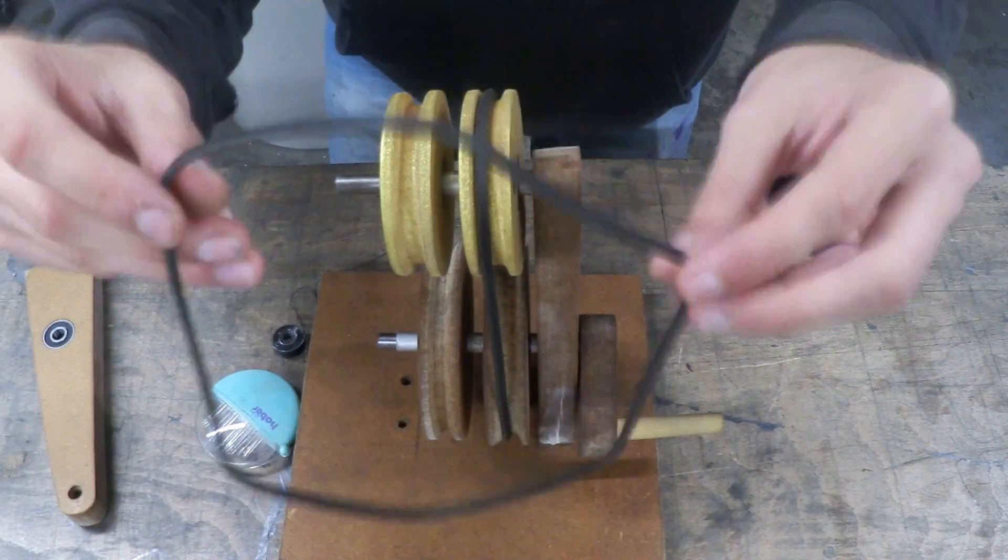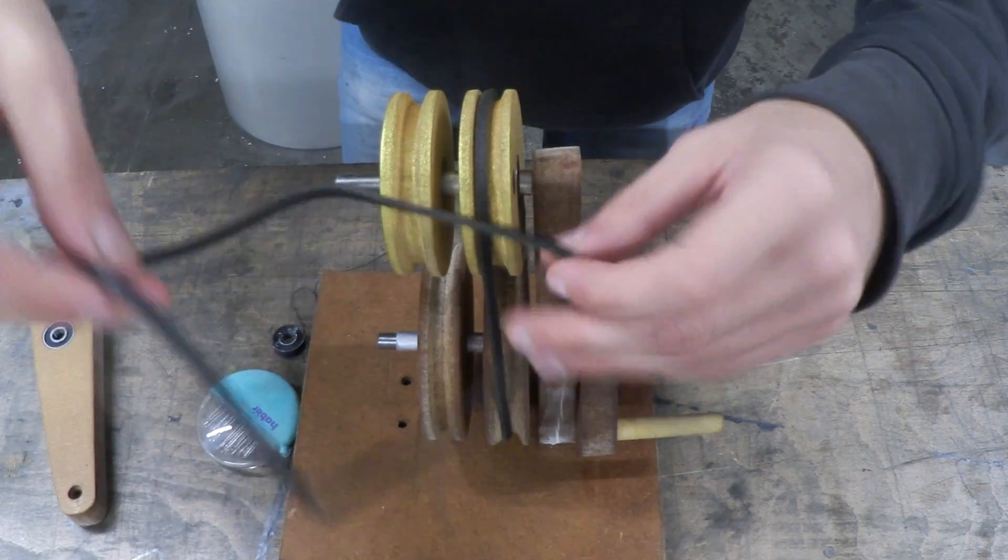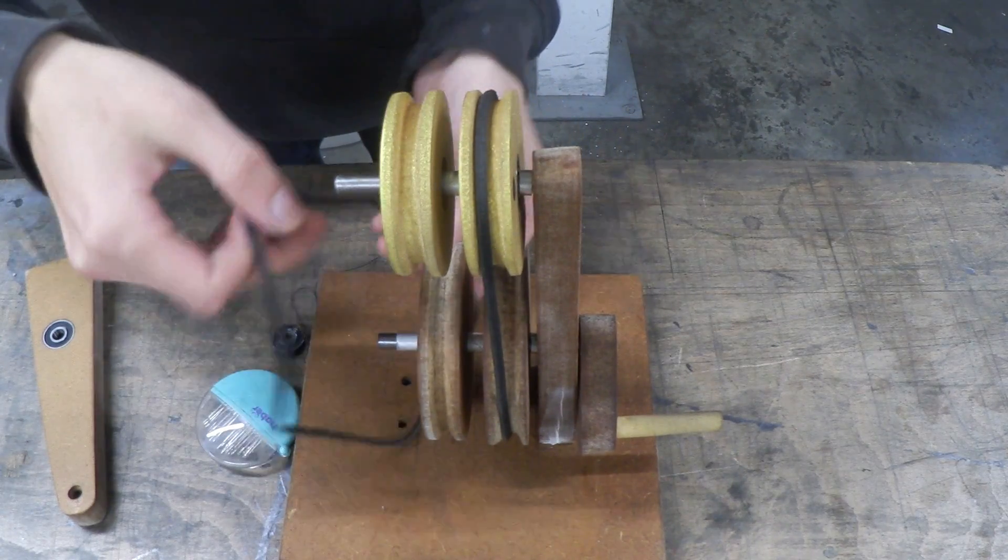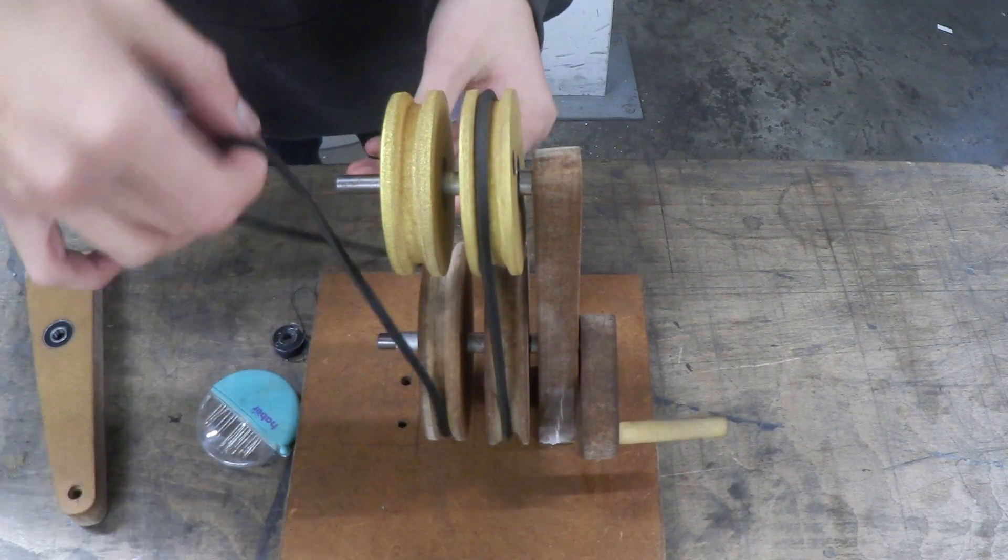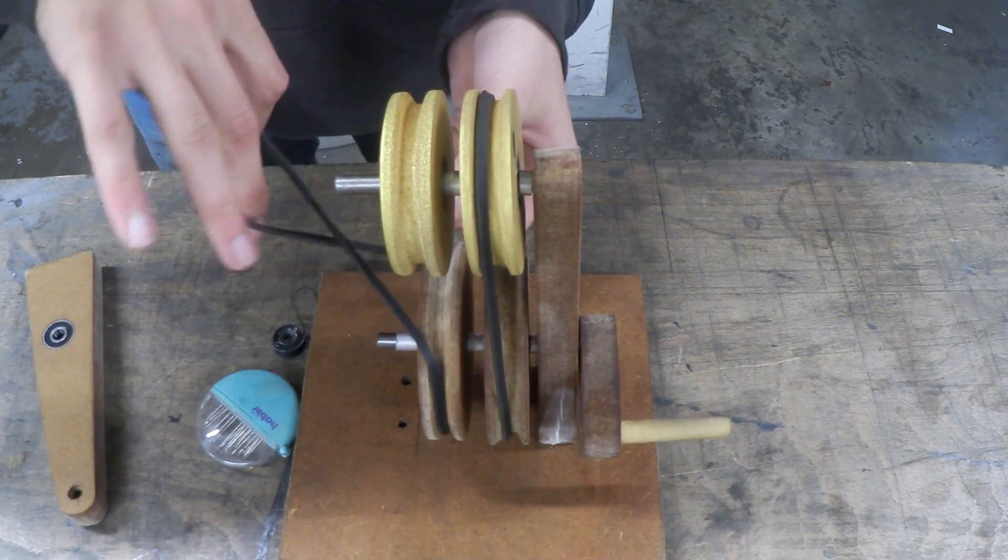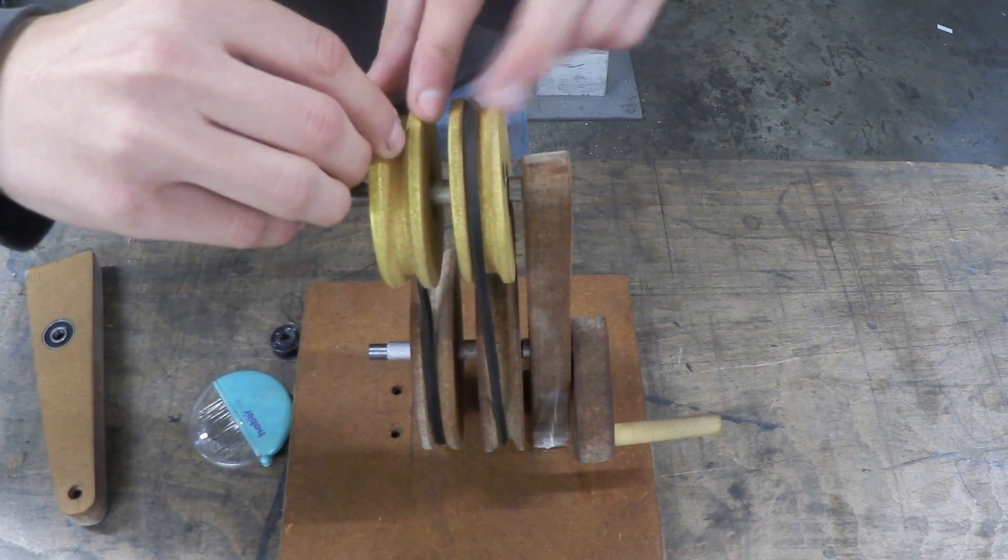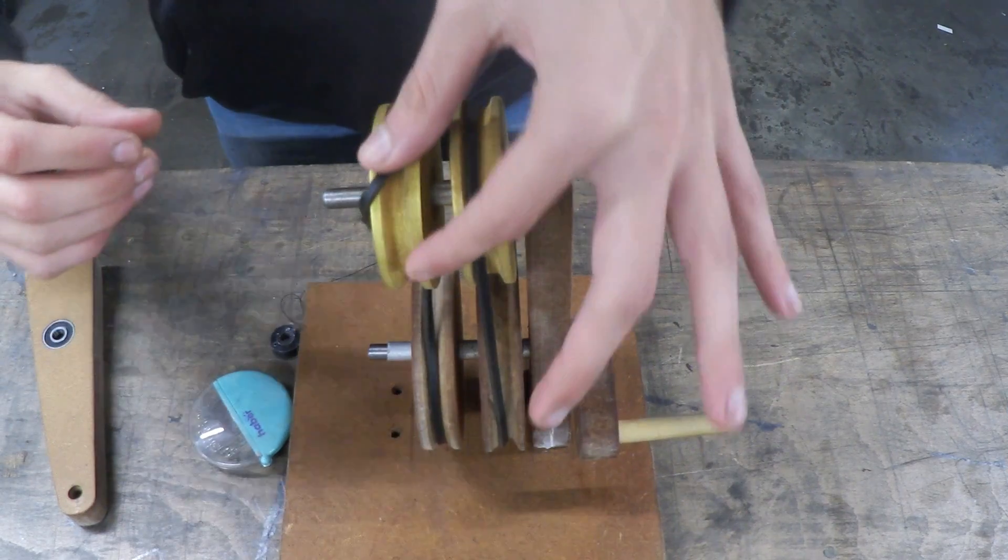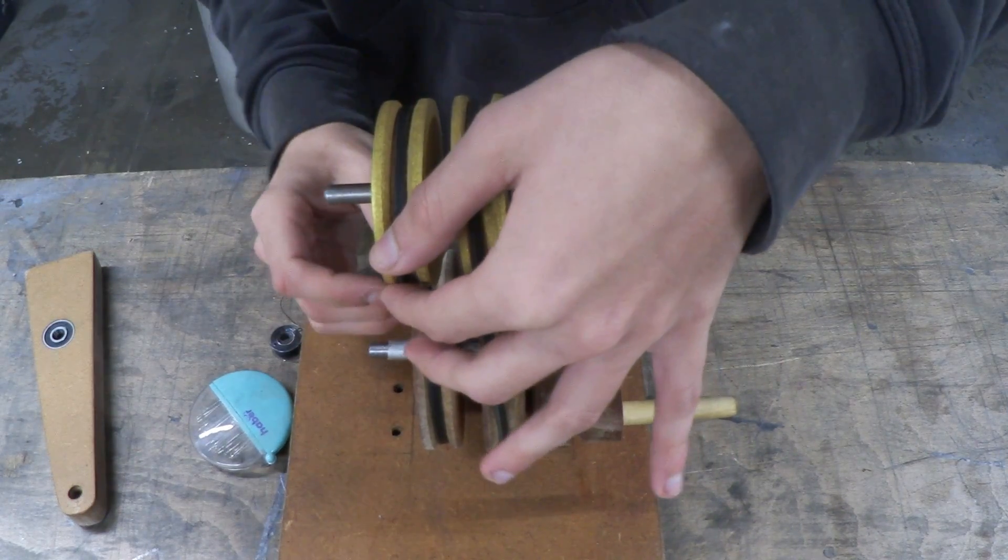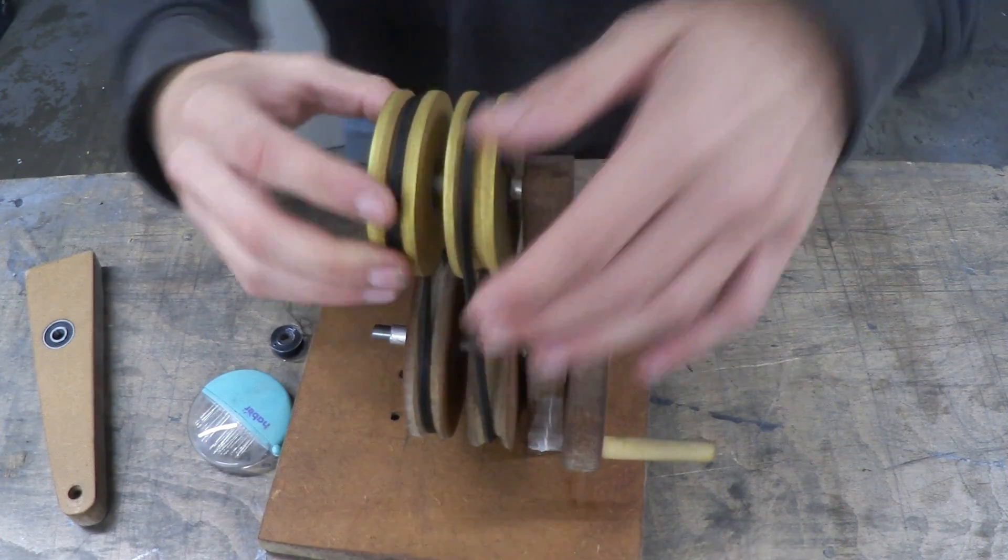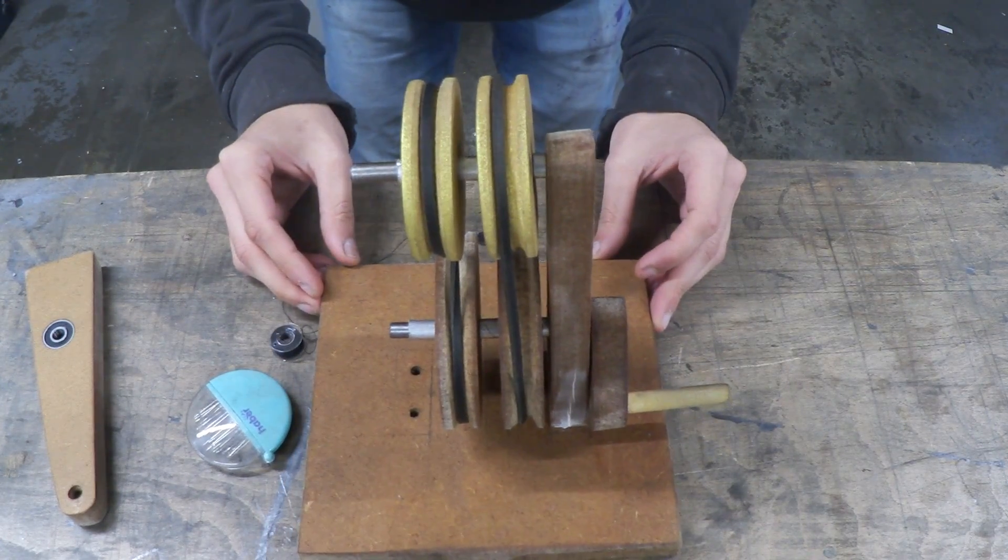So we're going to attach this one the same way, but there's one little difference. And that is we're going to put a twist in it like this. So again, wrap it around the bottom, put your twist in it, bring it around to the top, grab a corner and then use your thumb to push it round. There we go. And it's as easy as that.